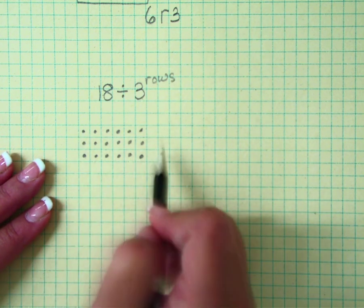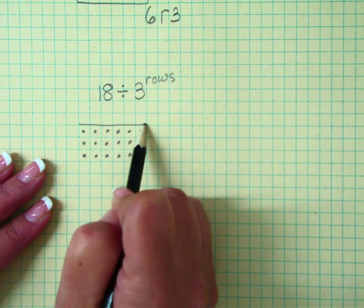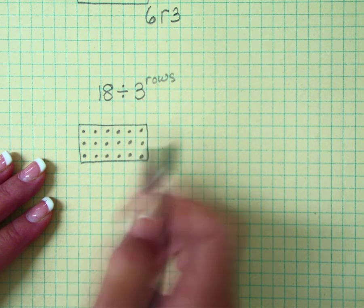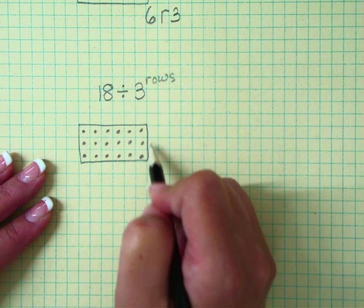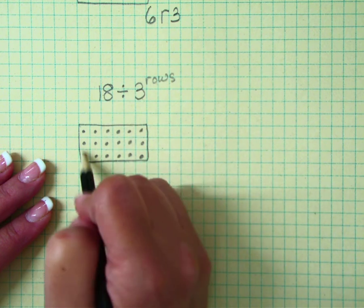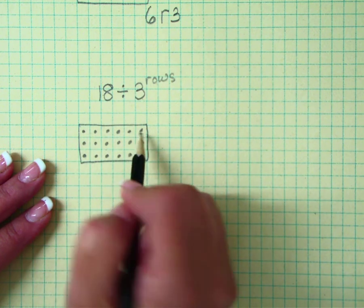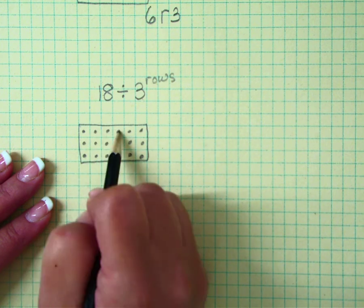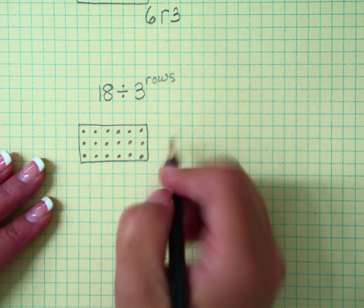Then you ask yourself, were you able to build a perfect rectangle? The answer is yes, and in this example we have nothing as a remainder.